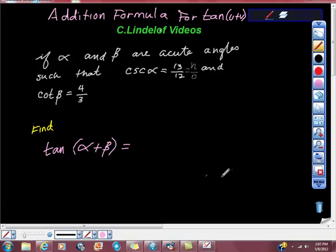Let's work on the addition formula for tan(U+V). If α and β are acute angles such that csc(α) = 13/12 and cot(β) = 4/3, then we're asked to find tan(α+β). What are we going to do first?